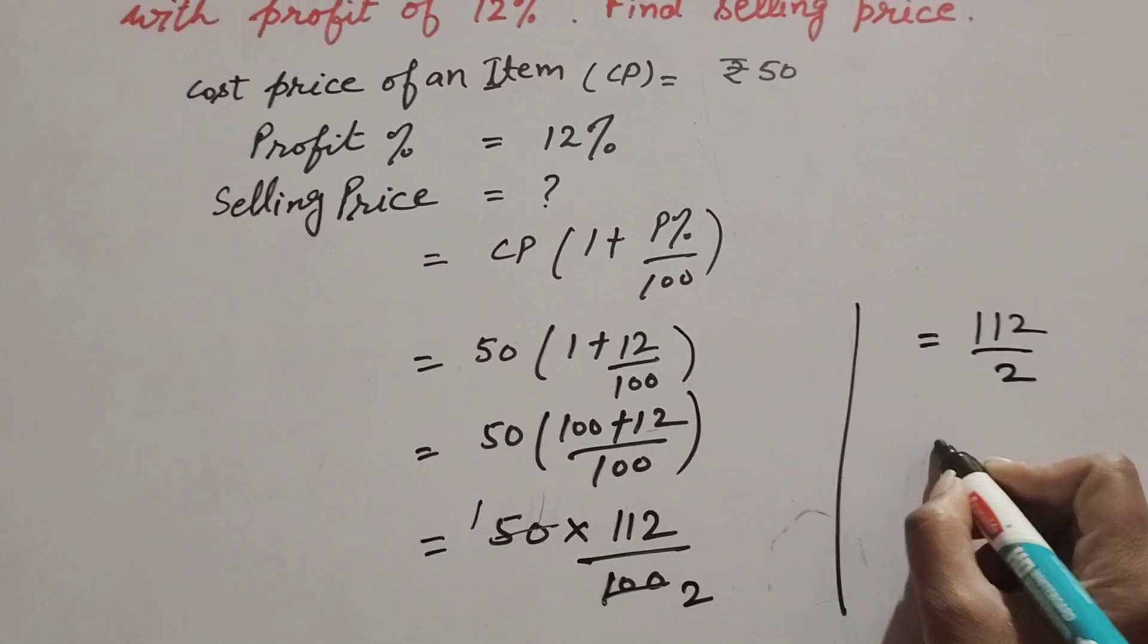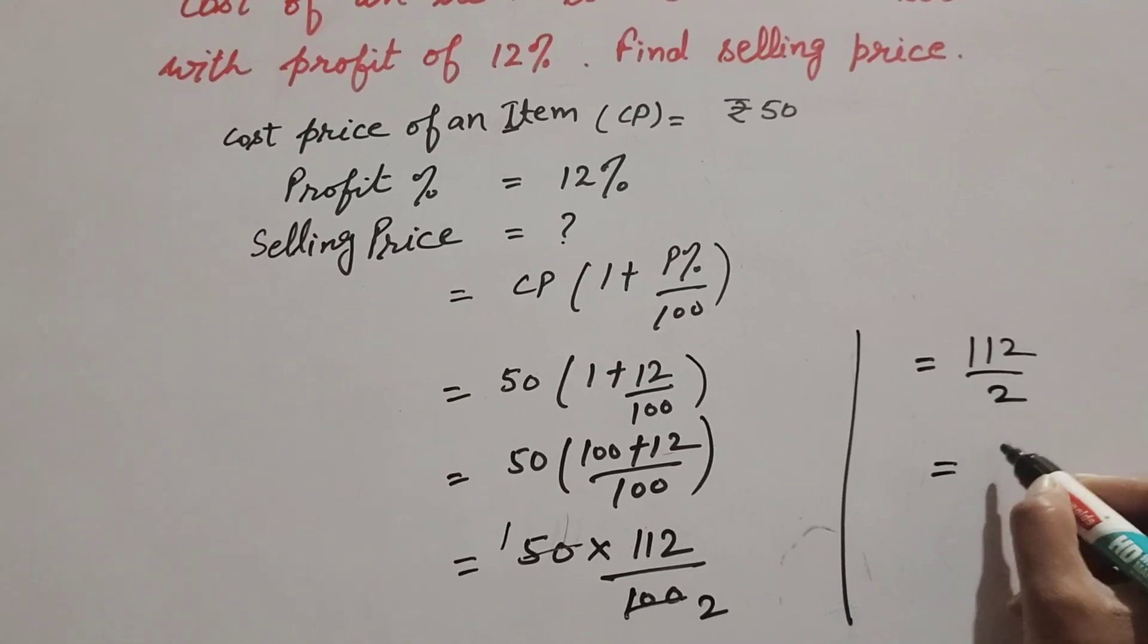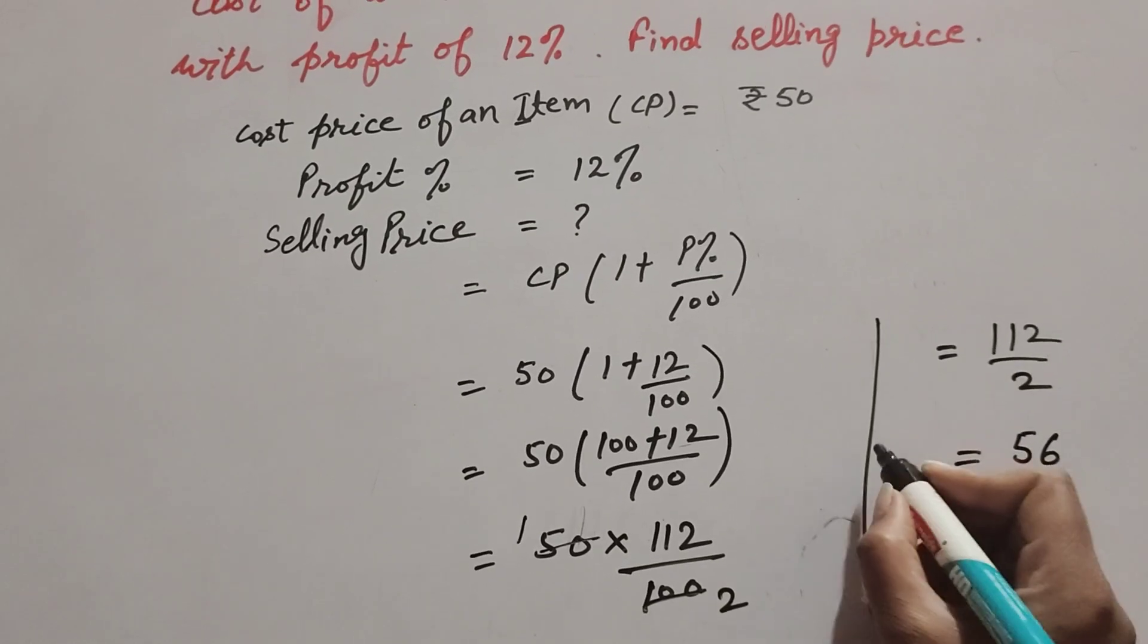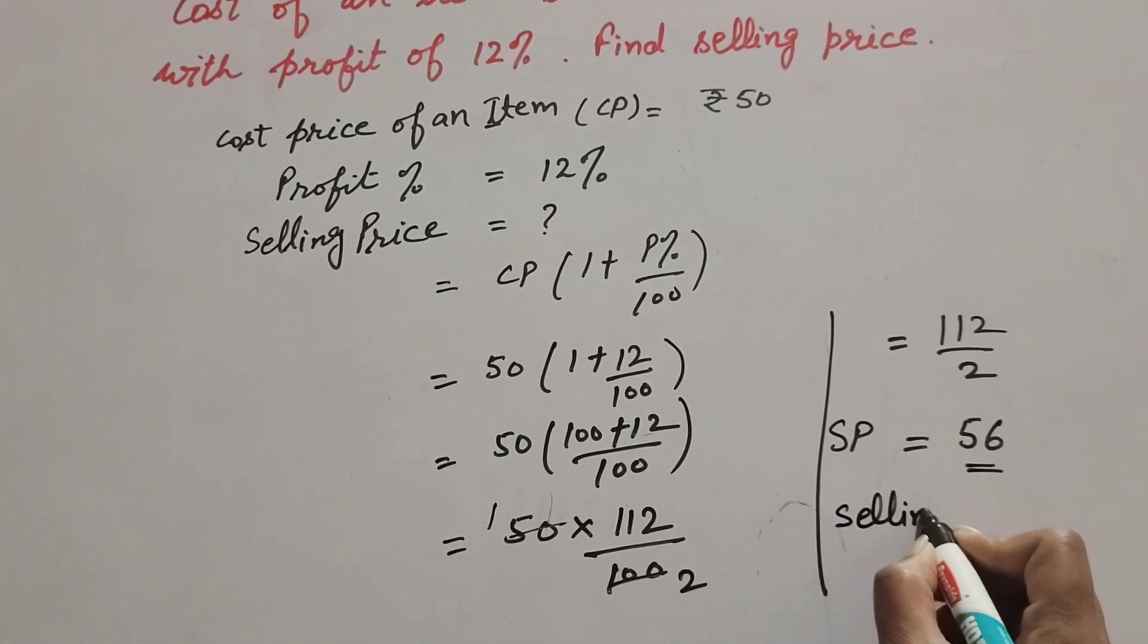So selling price is equal to 56. Selling price of an item is equal to ₹56.